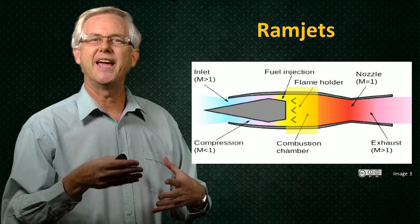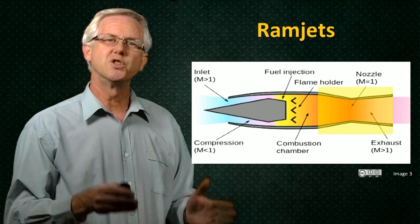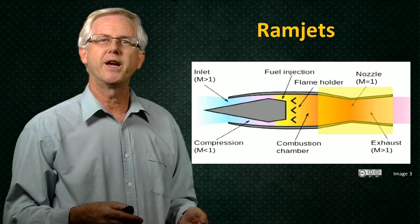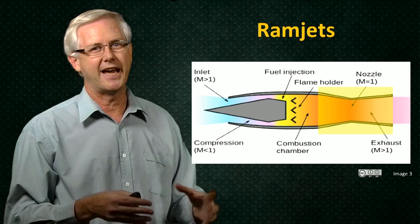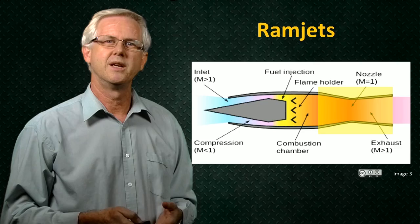We then inject some fuel in the combustion chamber, and we add the energy of the combustion of the fuel to the flow. And then we exhaust the gas through a nozzle. And just as with the jet engine, if we can produce a flow coming out of the nozzle at a higher momentum than it came into the engine, we can potentially produce thrust from the engine.